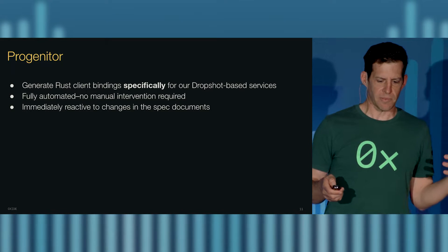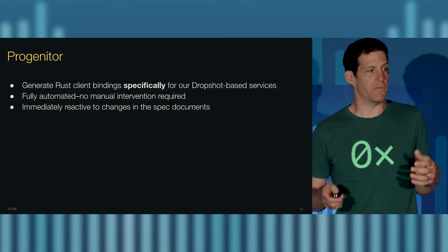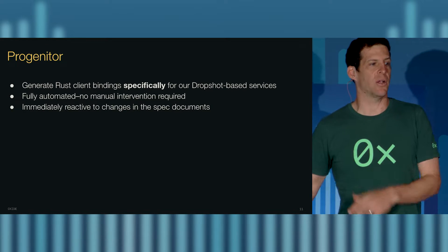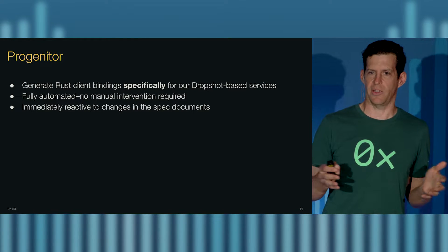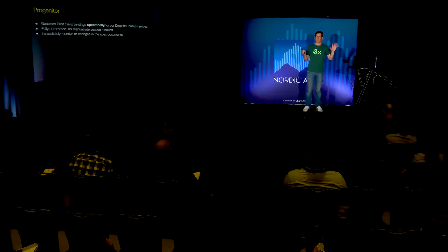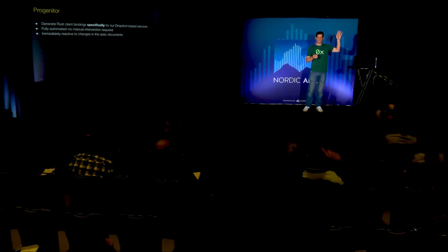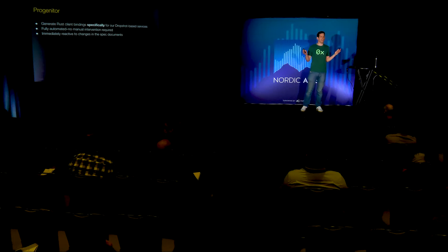So, like we did with so many things at Oxide, we built our own. We built this thing called Progenitor. It outputs client bindings, but really specifically for the shape of OpenAPI document we were getting out of our Dropshot-based services. Initially this wasn't intended to consume any type of OpenAPI in the world. OpenAPI is very diverse — there are eight different ways of saying the same thing. We were trying to be very inflexible, to do it one particular way. With Progenitor, we wanted this to be fully automated, no user intervention required, just immediately picking up any changes to the specification documents and turning that into a client binding.